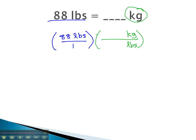Then we look up on our conversion factor sheet what the relationship is between kilograms and pounds, and we'll find that 2.2 pounds, 2.20 pounds is equal to 1 kilogram.